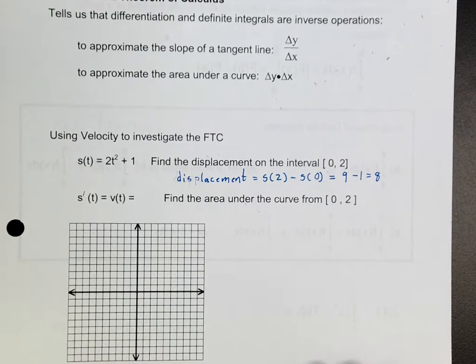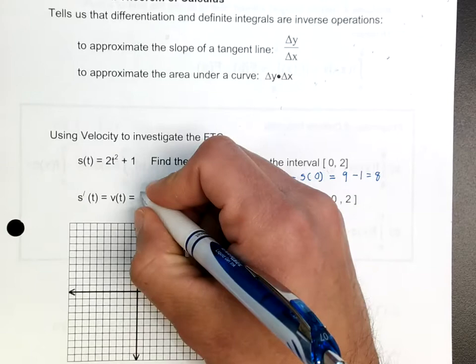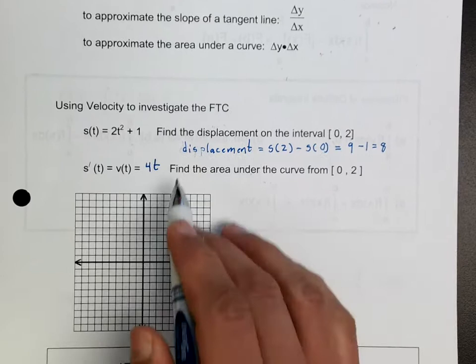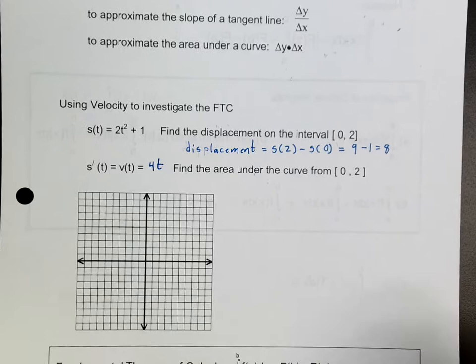Now what they want you to do on the next one is find the derivative of this displacement — we know that's velocity — so the derivative is going to be equal to 4t. Now they want you to find the area under this line between 0 and 2.